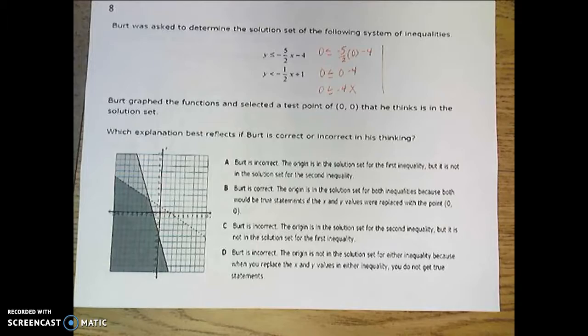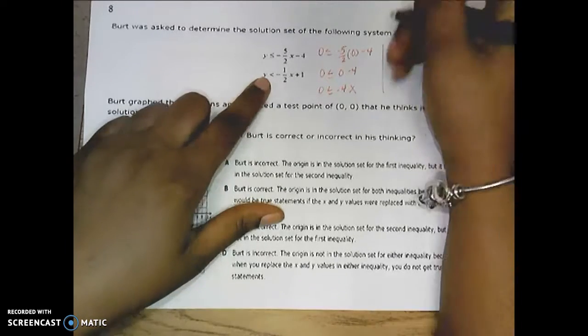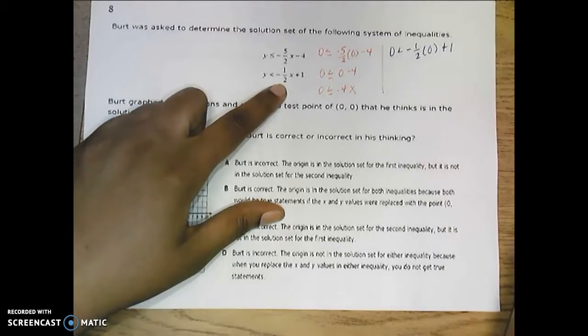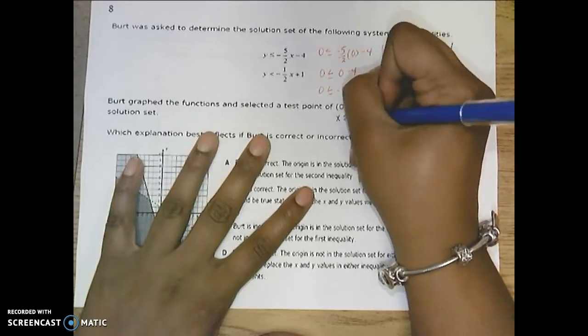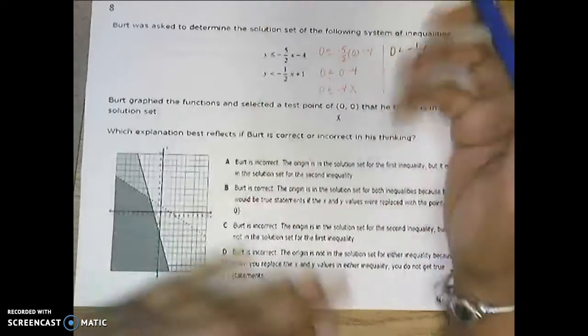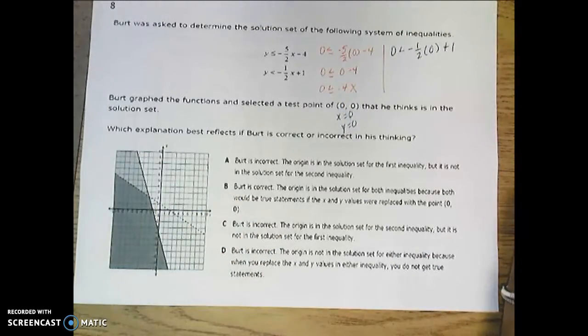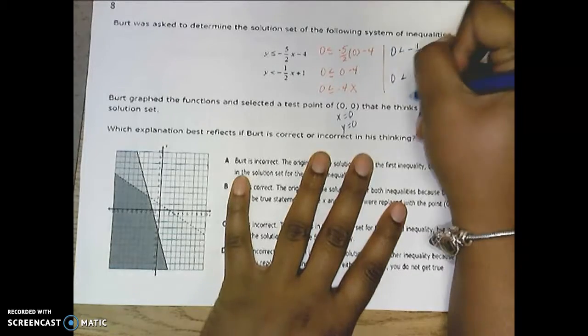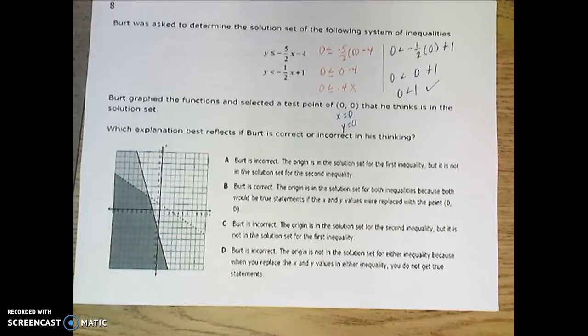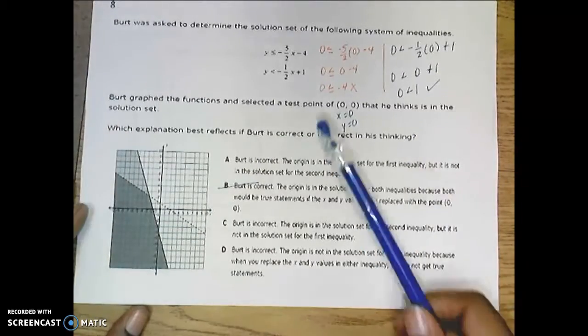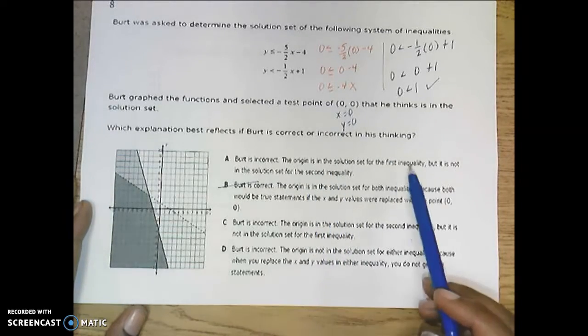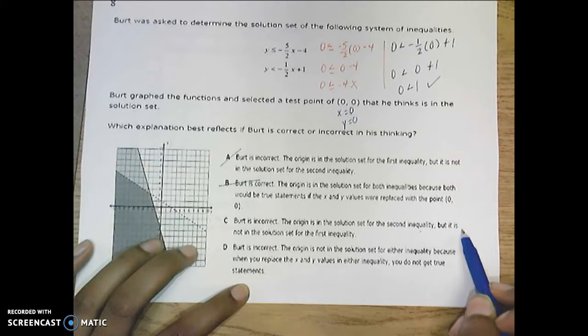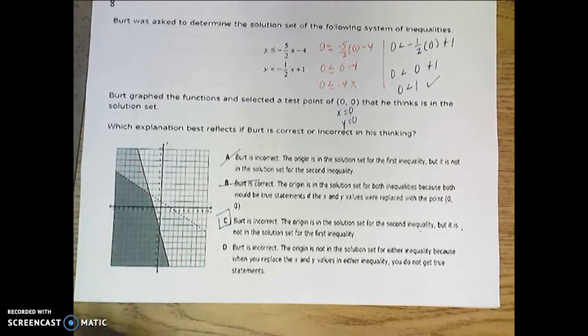Then we look at the second inequality that's given. So the second inequality says that 0 is less than a negative 1 half times 0 plus 1. All I did was plug in a 0 for both x. I plugged in a 0 for x and a 0 for y. So what happens is I have 0 is less than 0 plus 1. And once that's simplified, 0 is less than 1. This one works out. So the question that says that Bert is correct, no, he's not because 1 works and 1 doesn't. He's incorrect. The origin is the solution set for the second inequality, but it is not a solution set for the first inequality. So that one, number 8, you should have had C.